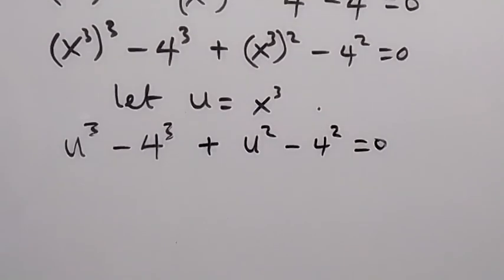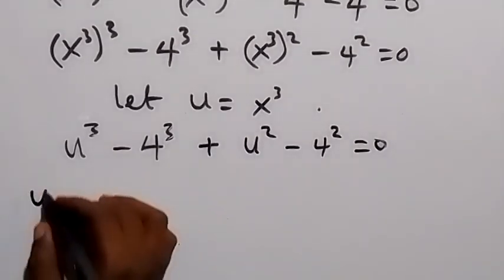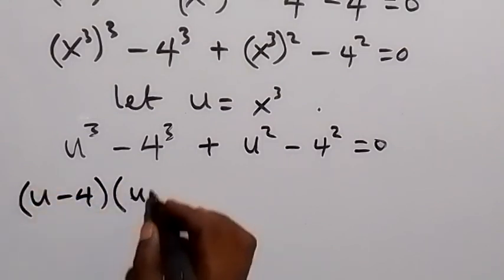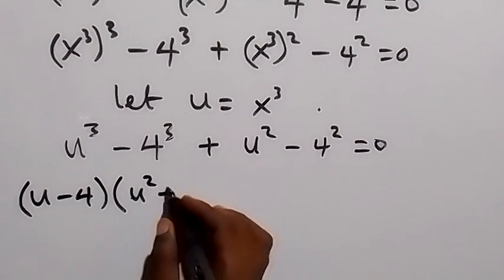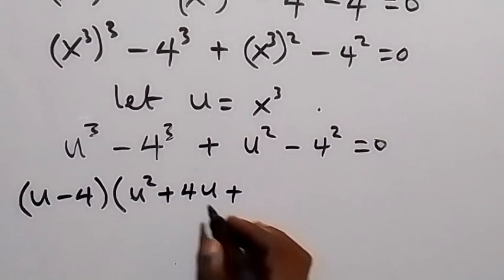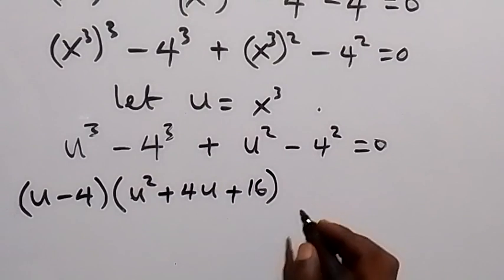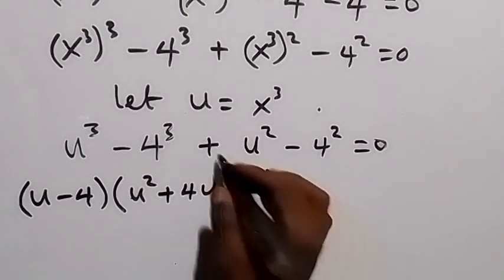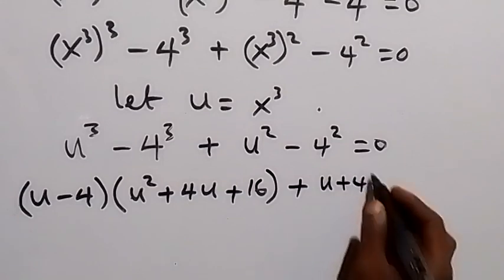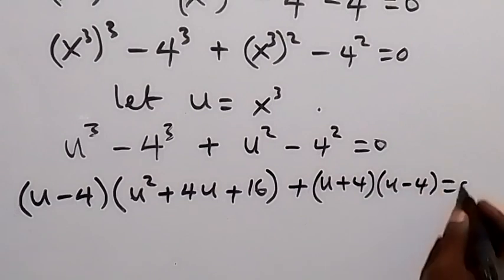We group as (u³ minus 4³) plus (u² minus 4²) equals zero. Applying the difference of two cubes identity to the first group gives (u minus 4)(u² + 4u + 16). Applying the difference of two squares identity to the second group gives (u + 4)(u minus 4).